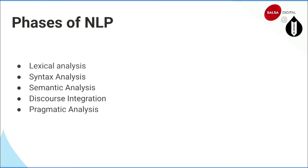NLP has five phases: lexical analysis, syntax analysis, semantic analysis, discourse integration, and pragmatic analysis. With lexical analysis, it recognizes and analyzes word structure — the collection of words or phrases in a language is the lexicon. In this stage, it breaks sentences into words, performs all the tasks discussed — tokenization, stemming, lemmatization — and applies part-of-speech tagging.